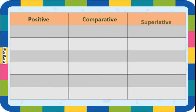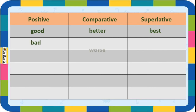Here we will write the different forms of positive, comparative, and superlative. Good - better - best. Remember this - it is a little different. Bad - worse - worst. Worse is the comparative form of bad, and worst is the superlative form of bad.